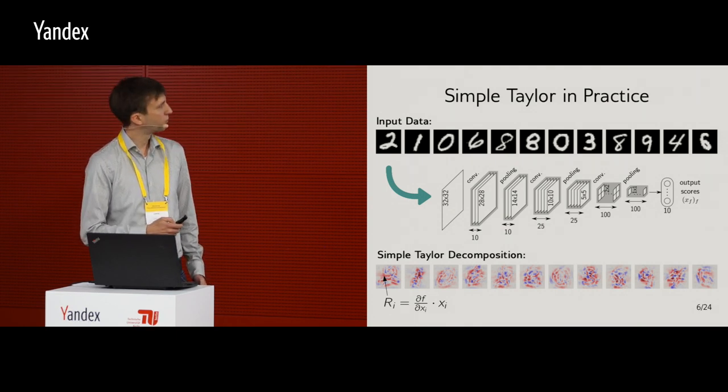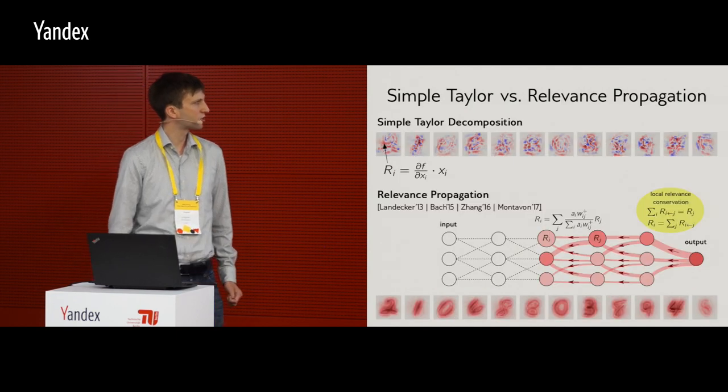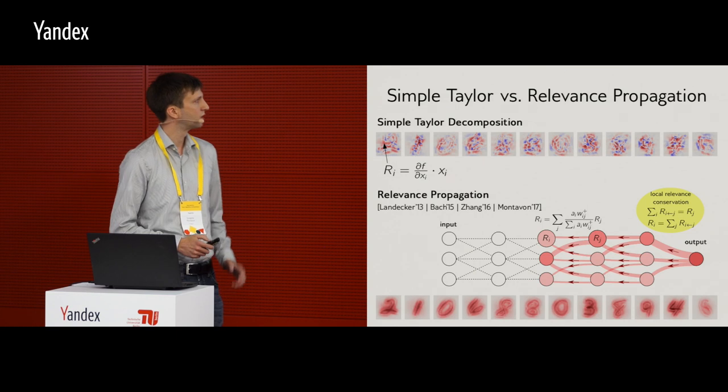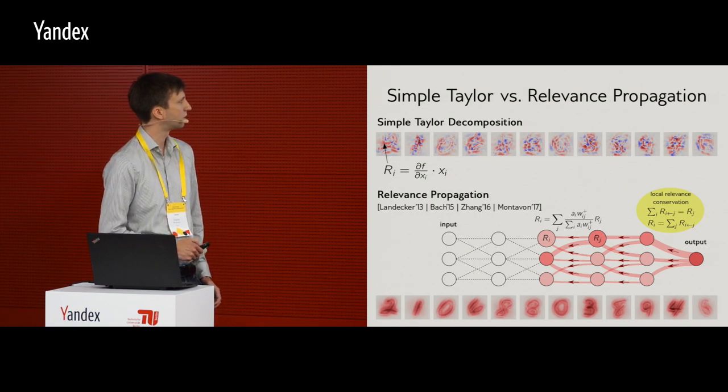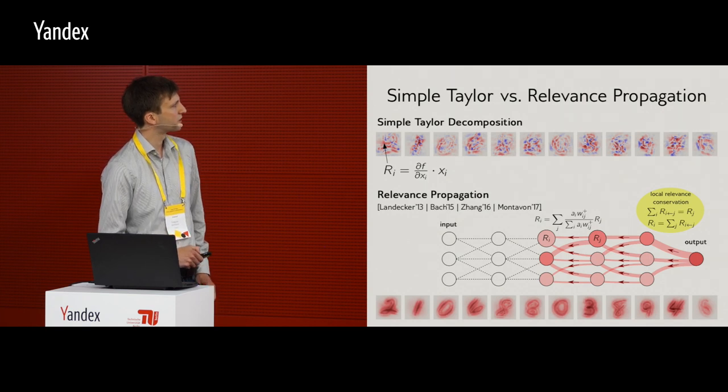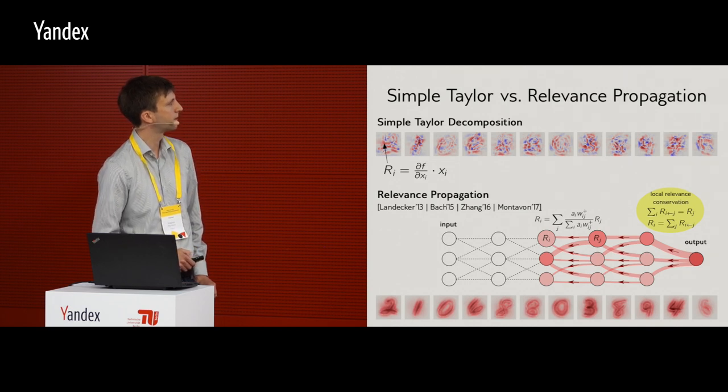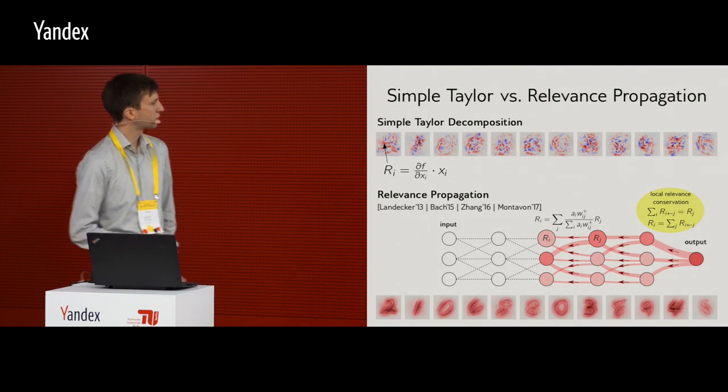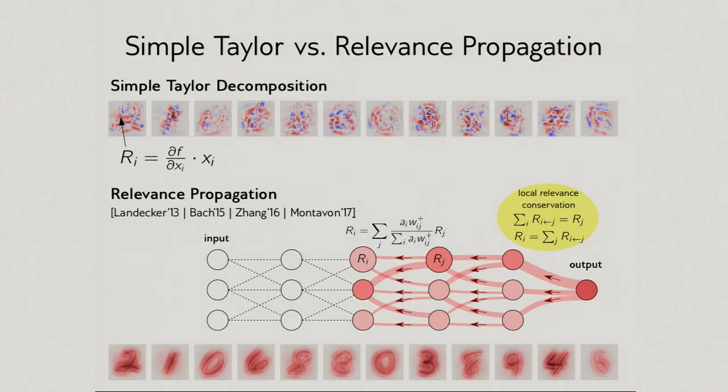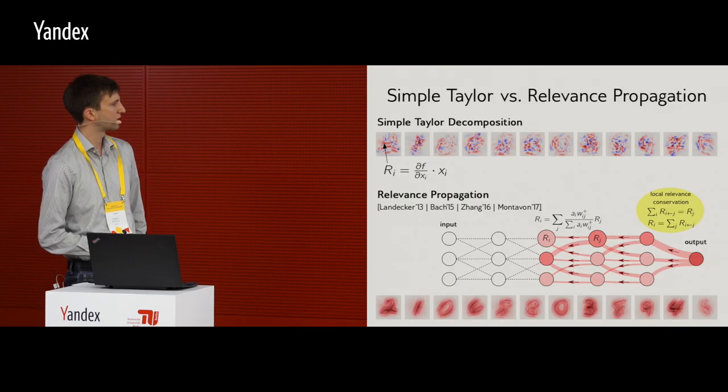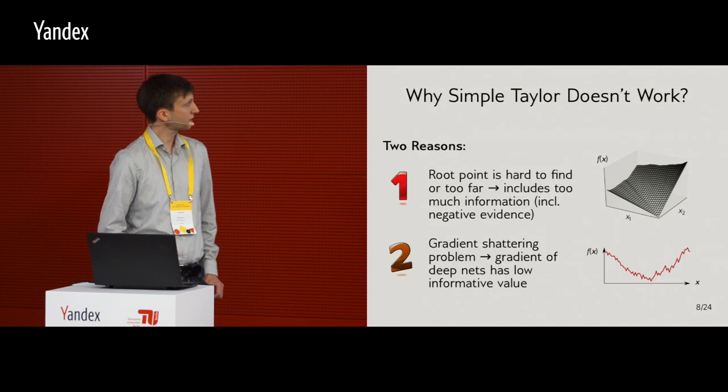So, now let's compare it to something like relevance propagation, and it was a framework which was proposed many times, but this is the version of Bach, especially the one recommended by Montavon, which is the Z plus rule. The relevance is propagated in this way. And the heat maps actually look much, much cleaner. First, there is no negative evidence, so it really has like a positive explanation of the classification, and then it doesn't flicker as you transform the digits.